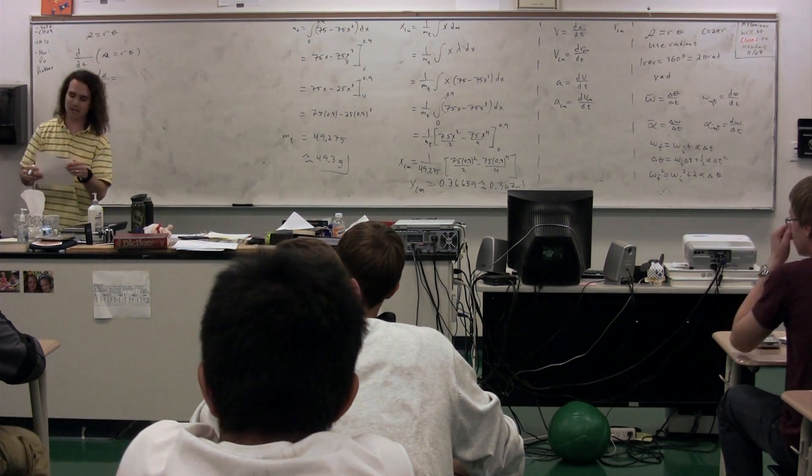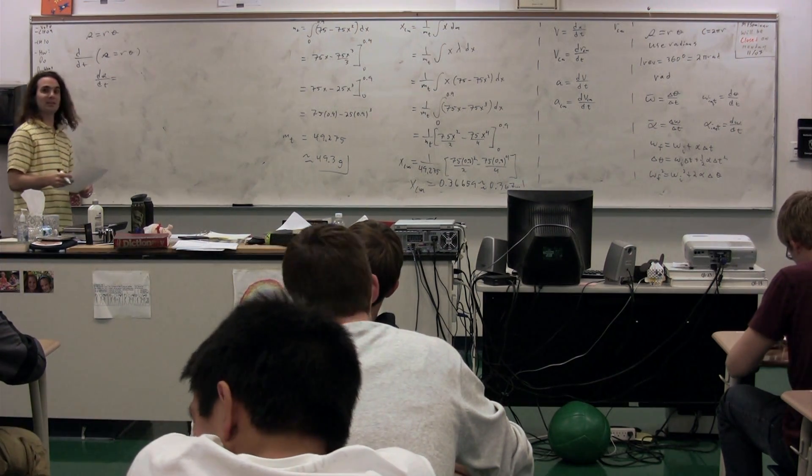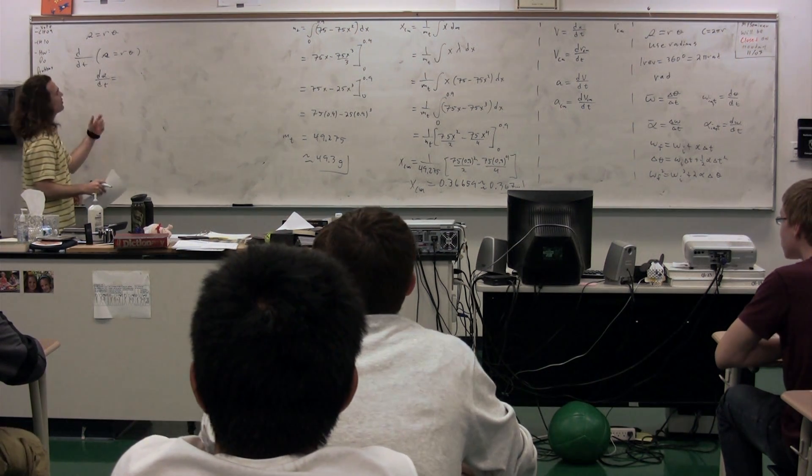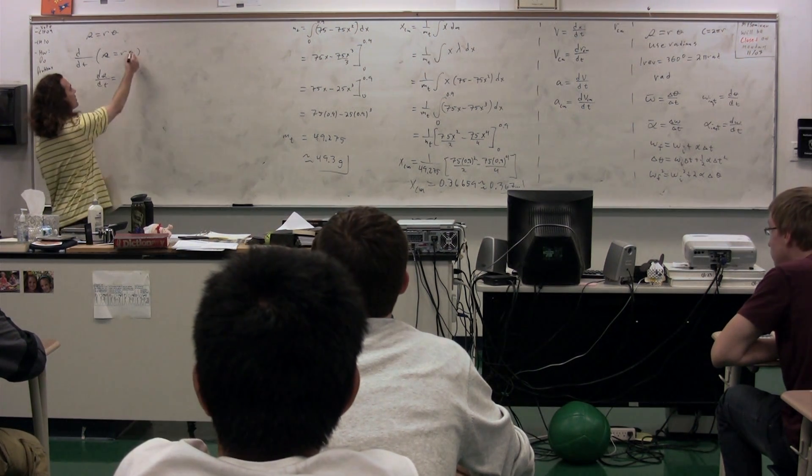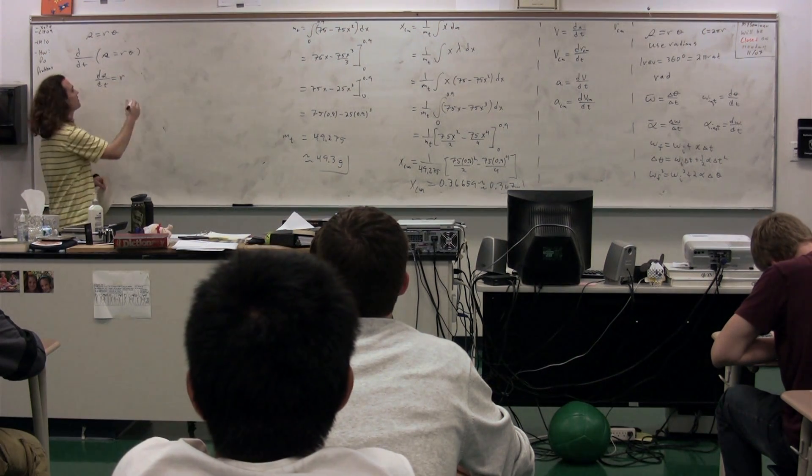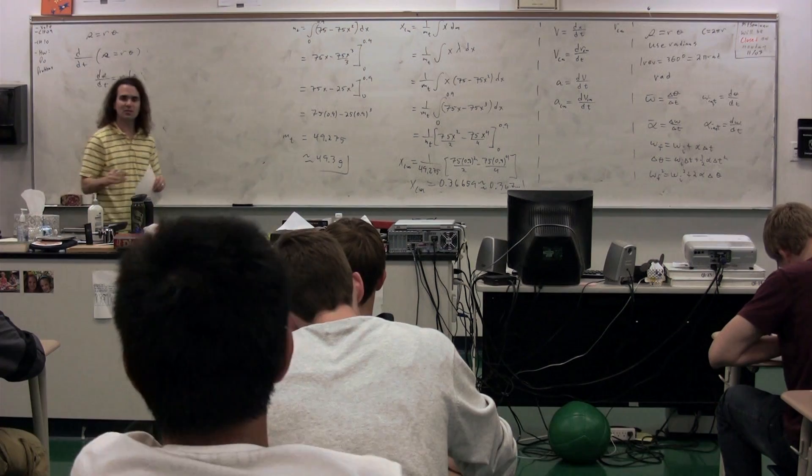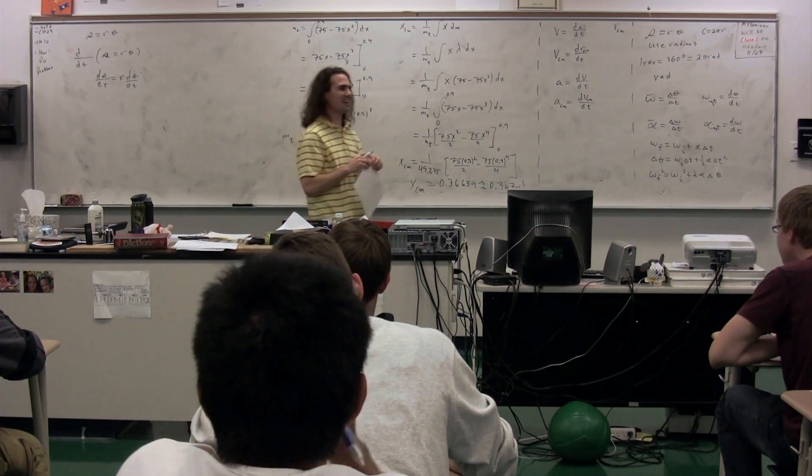So this will be the derivative of arc length with respect to time is equal to, what's the derivative of the radius with respect to time, assuming the radius is constant? Well, actually, that wasn't fair because we actually have it multiplied by theta. So it's just going to stay there as the radius because it's, so d theta dt. So assuming a constant radius, we're going to have r times d theta dt.